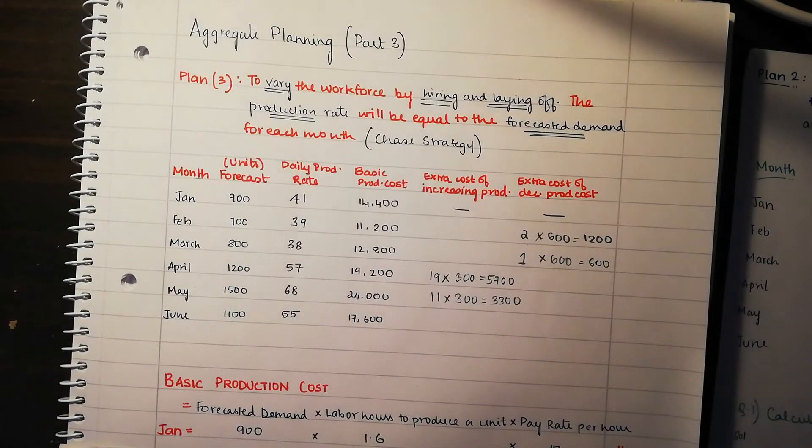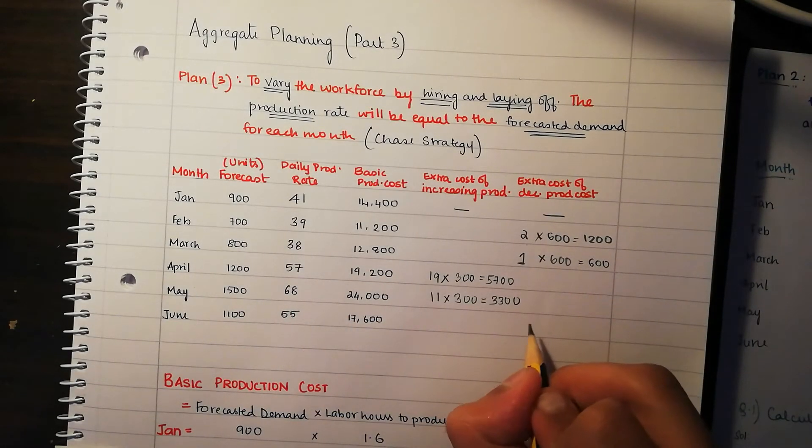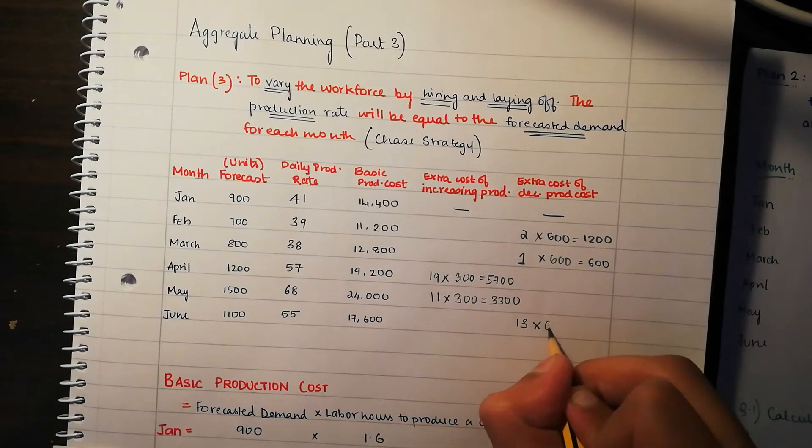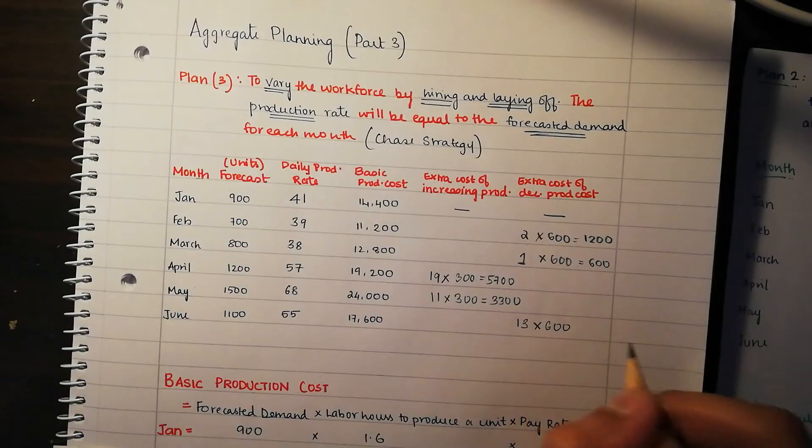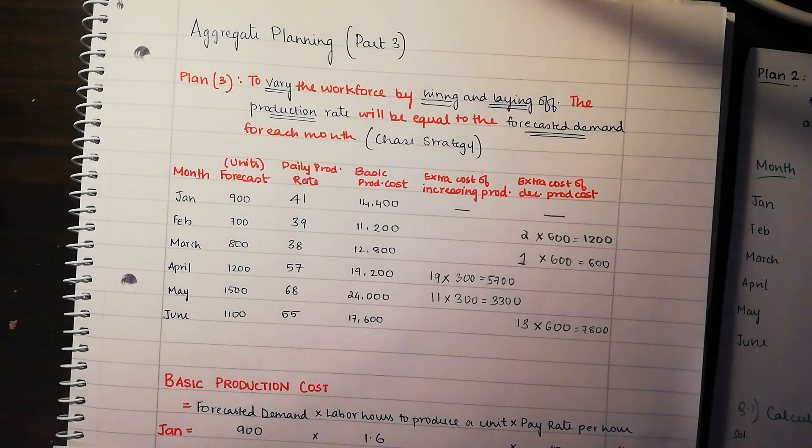In June, we're kind of slacking off here. From 68, we're going to 55, and that's going to be 13 units. It's decreasing by 13 units. So you come back here from where we started, 13 multiplied by 600, which is going to be 7,800.